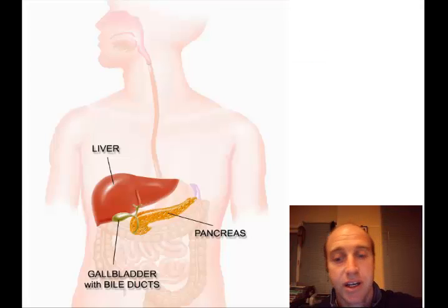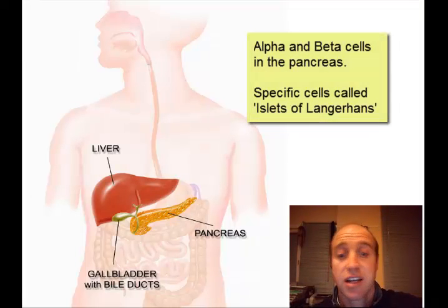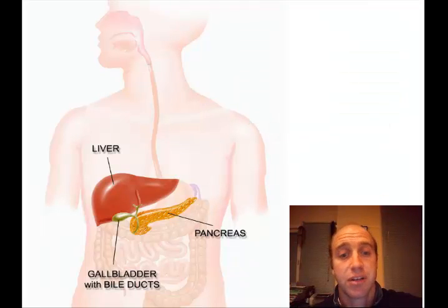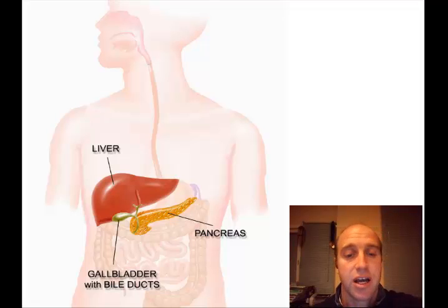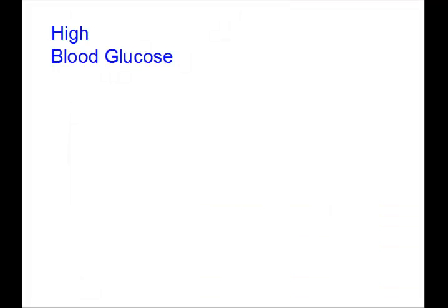Let's have a look at the organs involved here. First off, we have the pancreas, which is where a lot of the detection occurs. It has a couple of really specific endocrine cells, which are used to detect the levels of glucose in the blood and respond by releasing hormones. The liver, on the other hand, is where that glycogen is stored. It can convert the glycogen to glucose, or it can convert the glucose to glycogen, whatever the blood level requires.